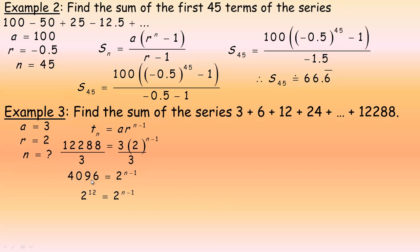So, we write 4,096 as 2 to the 12th equals 2 to the n minus 1. The bases are the same here. So, to solve for n, we can equate the exponents. So, we write 12 is equal to n minus 1. So, n minus 1 equals 12. So, n would be 13. It's 13 that you subtract 1 from to get 12. So, if n is 13, so there's 13 terms.